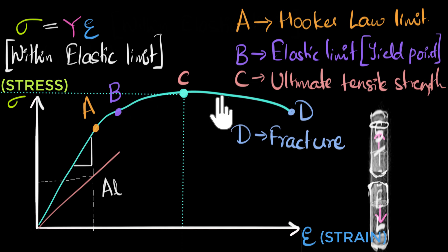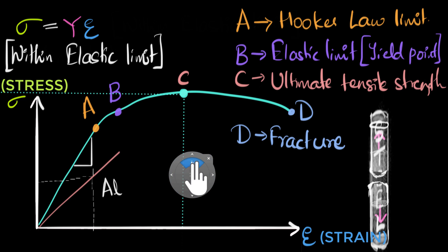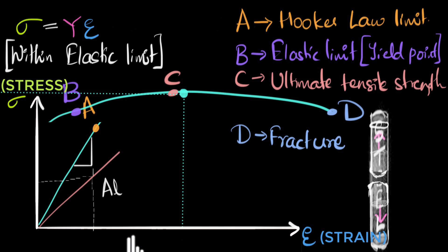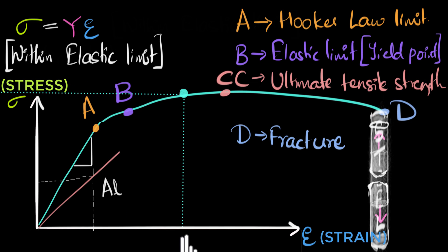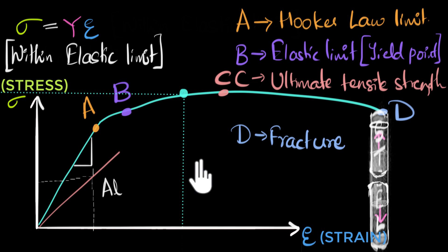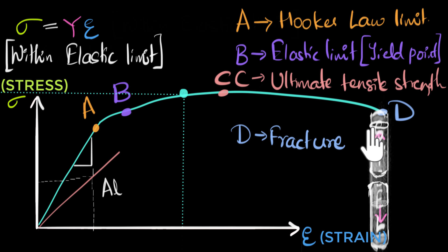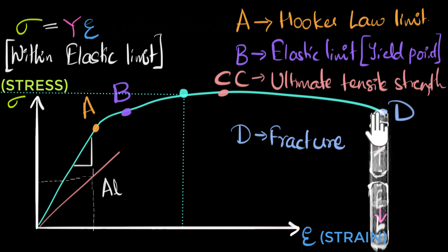One more interesting region is the plastic flow region, where stress is pretty much constant but strain keeps increasing. If you take a metal like gold, it turns out it has an incredibly long plastic flow region. That tells us that gold can be deformed a lot in this region before it hits fracture. In fact, if you take a gram of gold, you can stretch it up to about two and a half kilometers before you reach the fracture point. Materials which have a very high plastic flow region — where points C and D are very far apart — we call them ductile materials. Gold is very ductile; platinum also turns out to be extremely ductile.